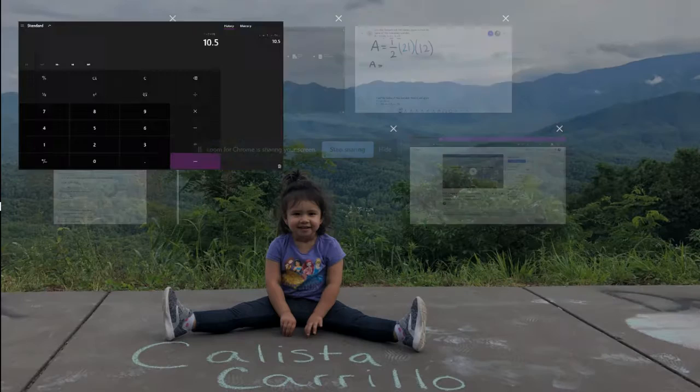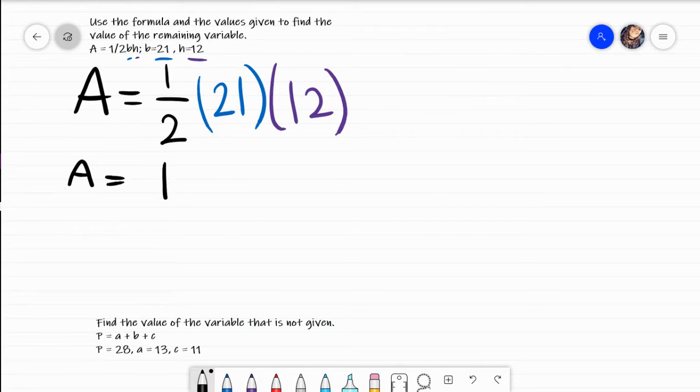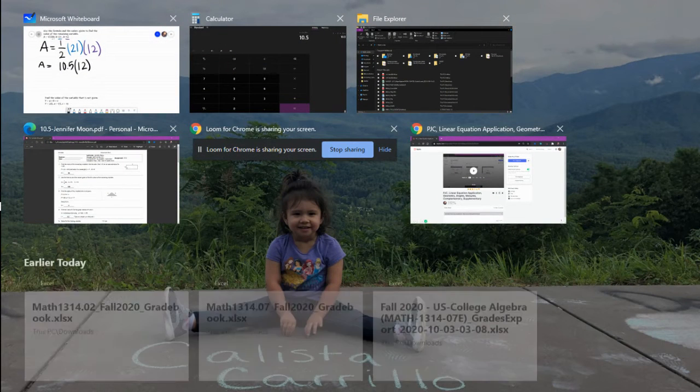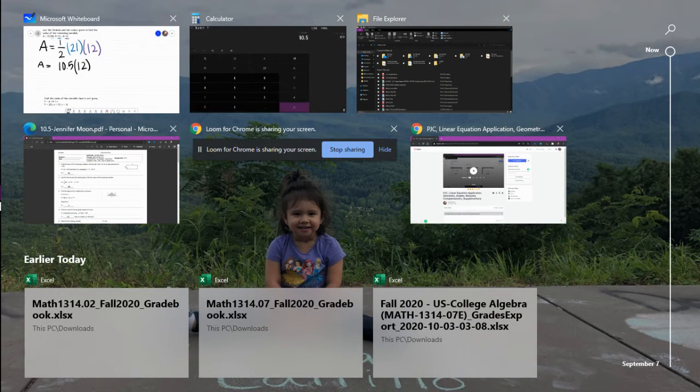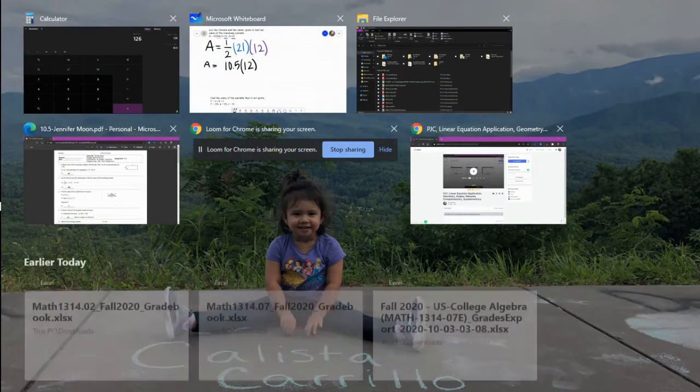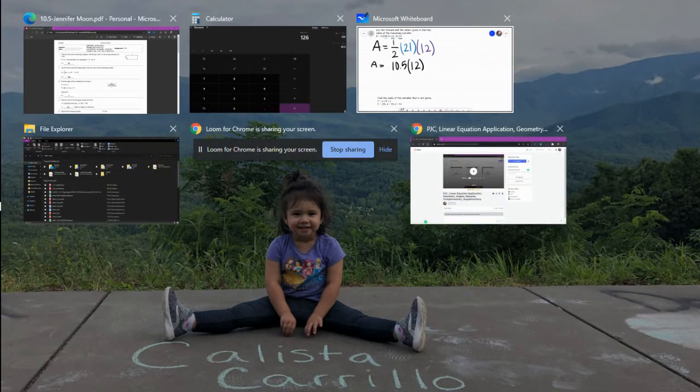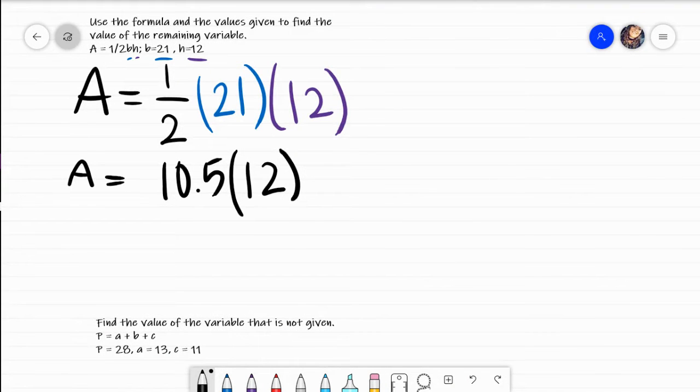If in our calculator we do, we would have 1 over 2 times 21, which gives us 10.5. So I have 10.5 times our 12, I get 126. So this tells me that my A equals 126.